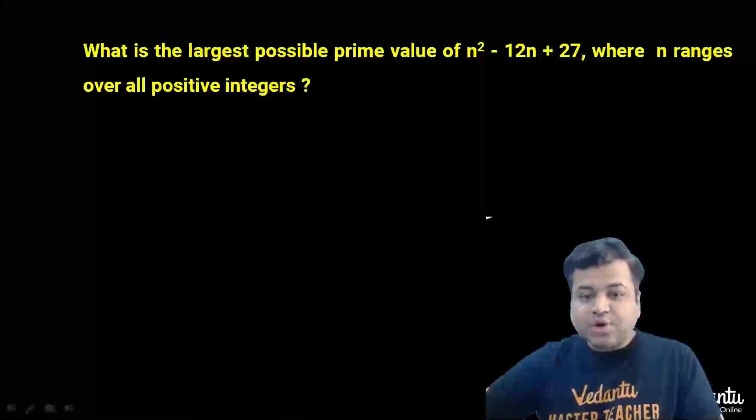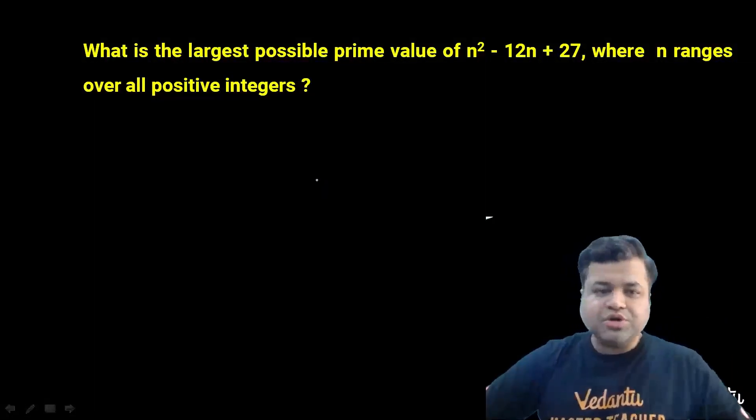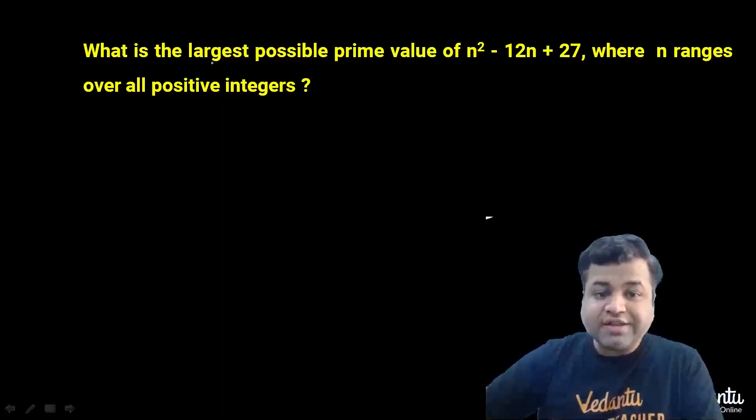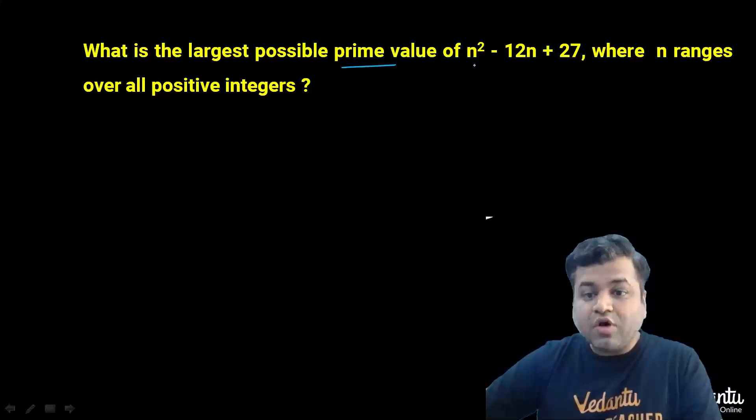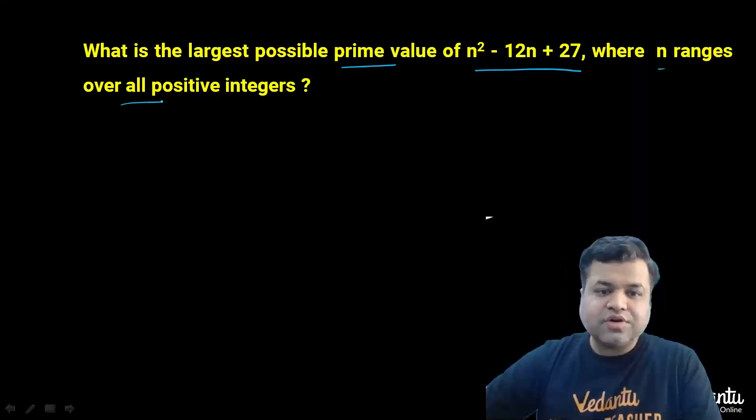Hi all. In today's dose we have a number theory question. The question states that we need to find the largest possible prime value of n² - 12n + 27, where n ranges over all positive integers.